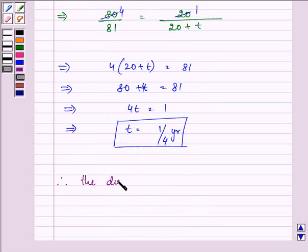Therefore the discounted period is 1 fourth of a year, that is 3 months. So this completes the session. Hope you understood the question well and enjoyed it while we were solving it. Have a nice day.